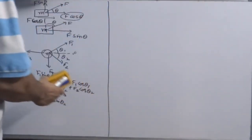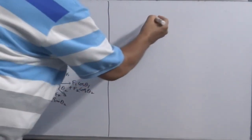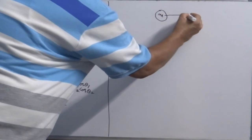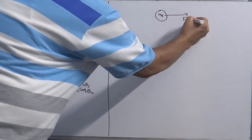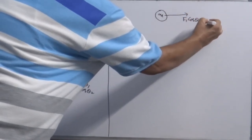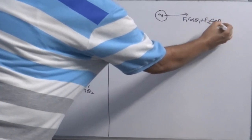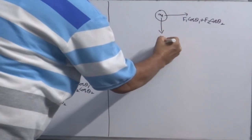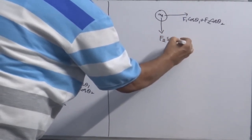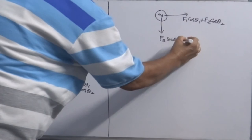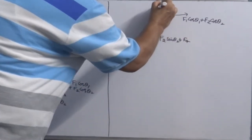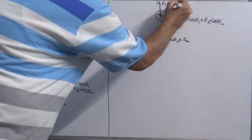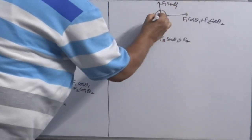Let's see how the diagram looks like. Mass M. Total force along this side is F1 cos theta 1 plus F2 cos theta 2. Total this side force is F2 sin theta 2 plus F4.